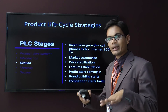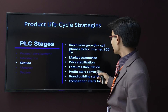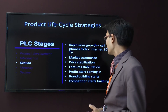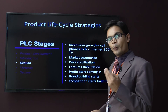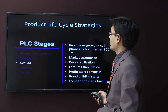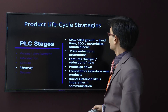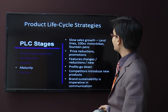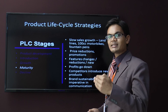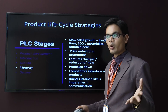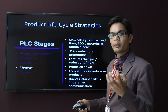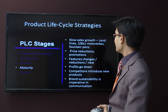In the growth phase there is rapid sales growth — we are not modifying the product at this phase and profit starts coming. We may try to launch similar kinds of products. Then maturity — slow sales growth. Examples: landlines, 100cc motorbikes, fountain pens. We need to reduce our price at this level because there are many competitors. Profits go down because competitor numbers increase. Brand sustainability is imperative in communication at this stage.